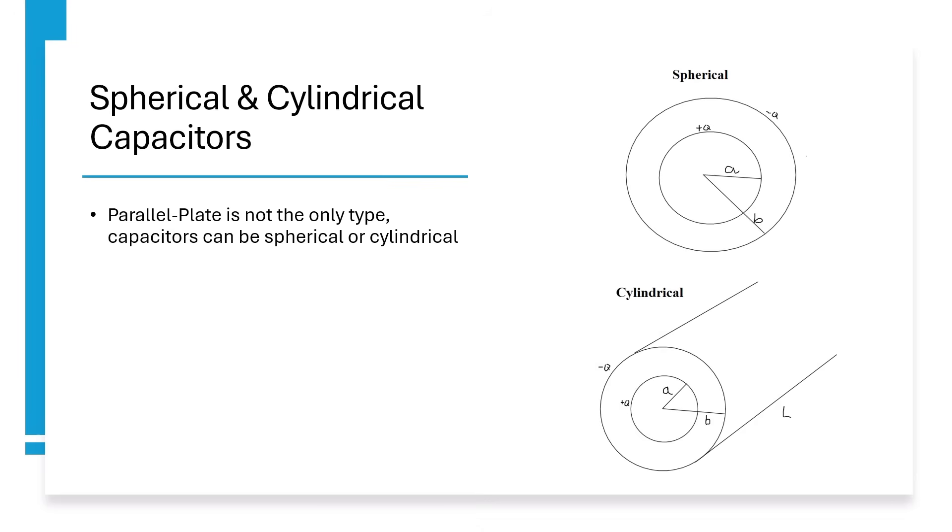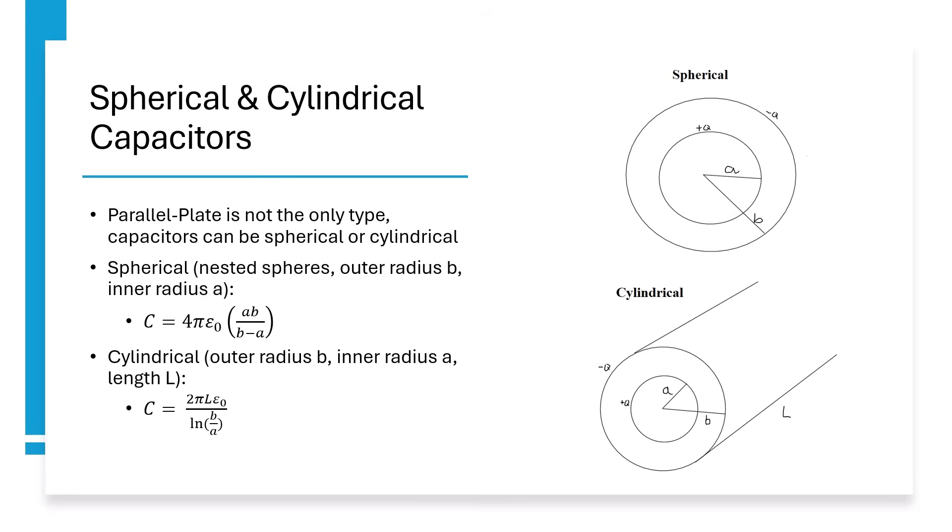Up until now, we've just talked about parallel plate capacitors, but there are also other types. Spherical capacitors are nested spheres with capacitance proportional to the product of the radii over the difference between the radii. Cylindrical capacitors are nested cylinders and their capacitance is a bit more complicated.